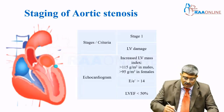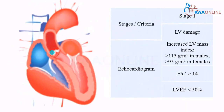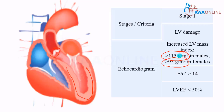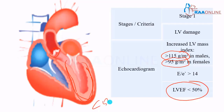Coming to Stage 1 — there is mild aortic stenosis. If you look at the echocardiogram, there might be increased left ventricle mass: greater than 115 gram per meter squared in males, or greater than 95 gram per meter squared in females. There might be slight LV damage and your ejection fraction is less than 50%. This is Stage 1.